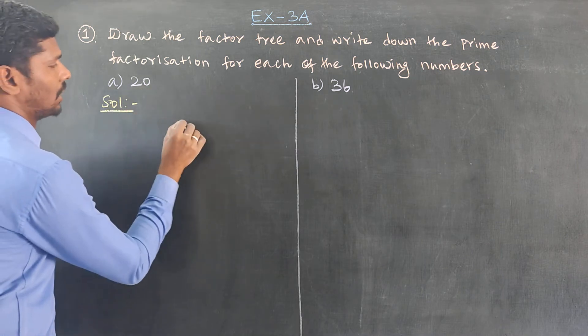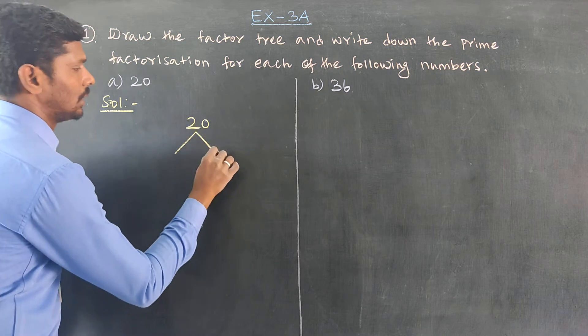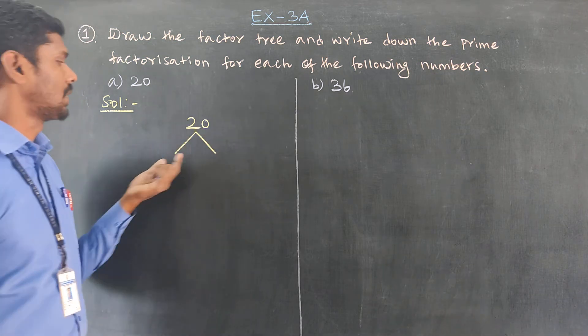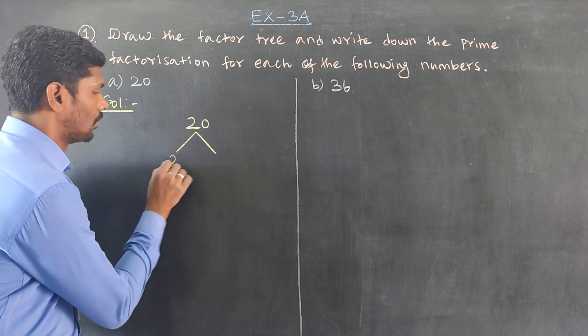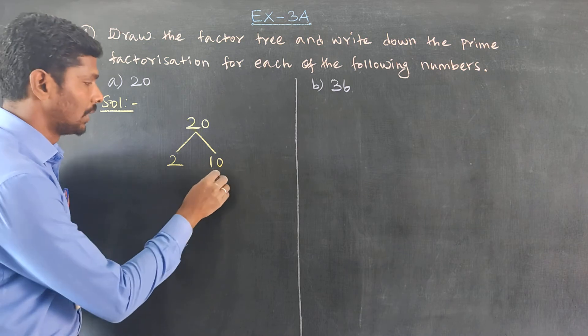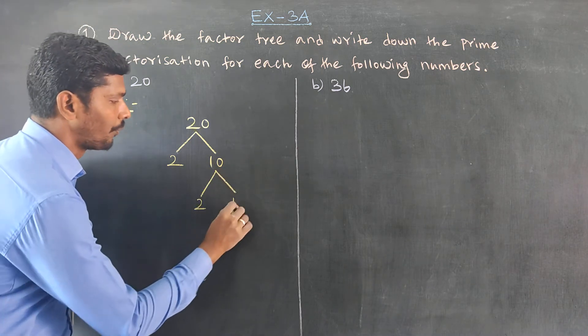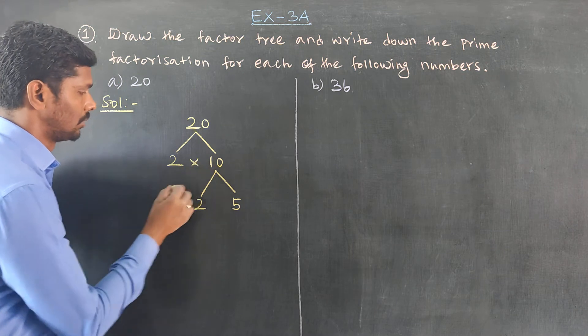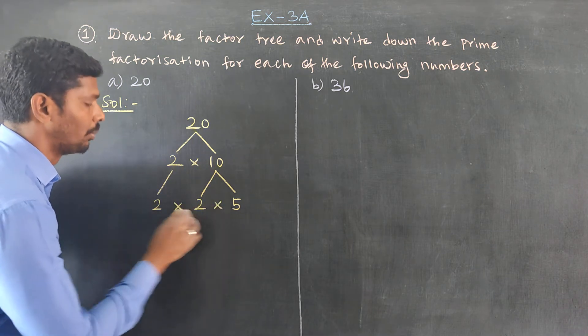This is number 20. 20 is not a prime number. 2 times 10. 2 times 10 equals 20. Now 10 can be written as 2 times 5.